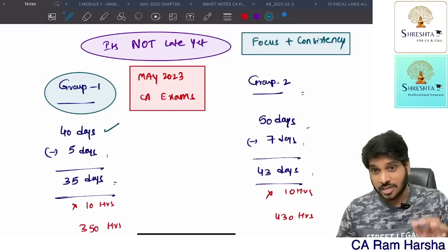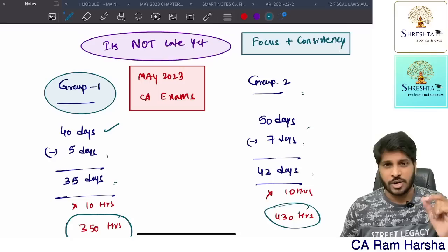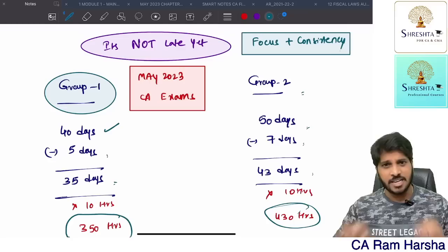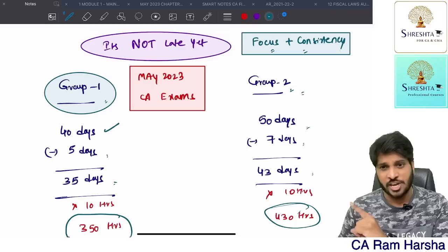In terms of the process, we are still having time. If you're only focusing on Group 1, you're having 350 hours of solid time. If you're only focusing on Group 2, you're having 430 hours. Ideally, if you're very focused and consistent, you can definitely clear one single group. One group you can clear, you still have chance.